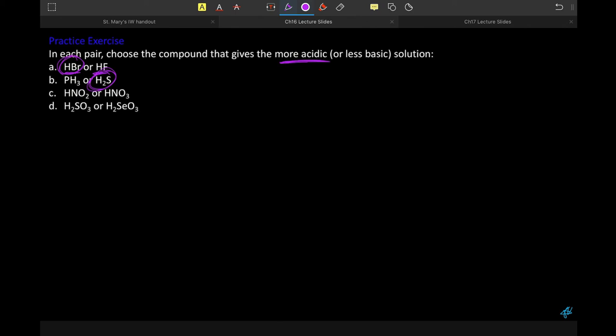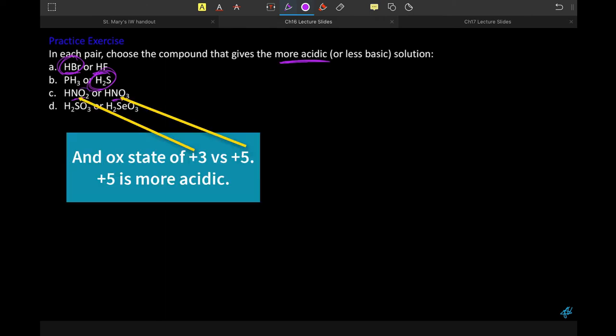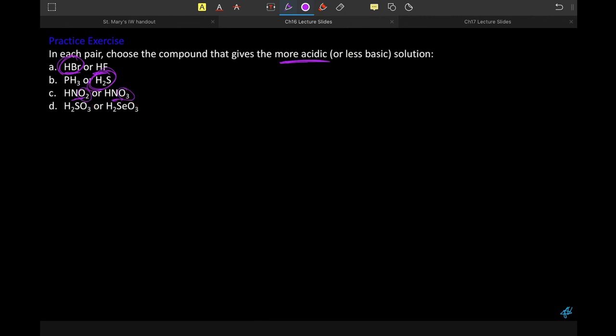Here we have, this is that series of oxyacids, and that we have a nitrogen at the center. And that nitrogen here is attached to two oxygens versus three oxygens. Three oxygens means more electron density pulled away from the hydrogen, more resulting stability for that anion. This is the more acidic of the species.